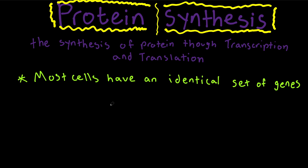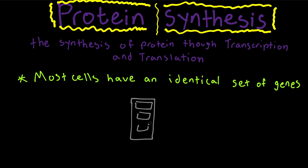To continue talking about protein synthesis, we need to talk about genes. As I talked about in the first part, genes are just the segment of DNA that code for a specific protein. Now, most cells have an identical set of genes. Think of DNA as a cabinet full of information — our genes. An employee won't use all the files in that cabinet, and another employee will have the same identical files but won't use the same ones as the first.